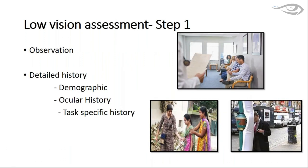The very first step in approaching low vision patients is observation and detailed history. Observation starts in the waiting area: watch how the patient behaves, whether they can fill in a form themselves, whether they walk independently into the clinic or need an escort, whether they are bumping into objects. These observations lead to conclusions about mobility issues or field restrictions.